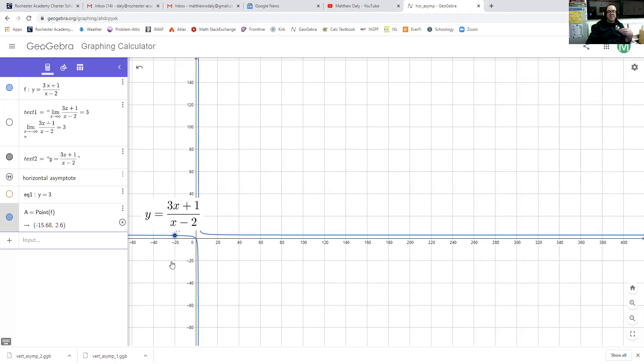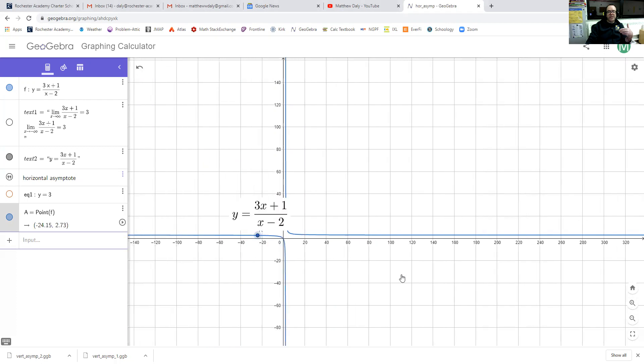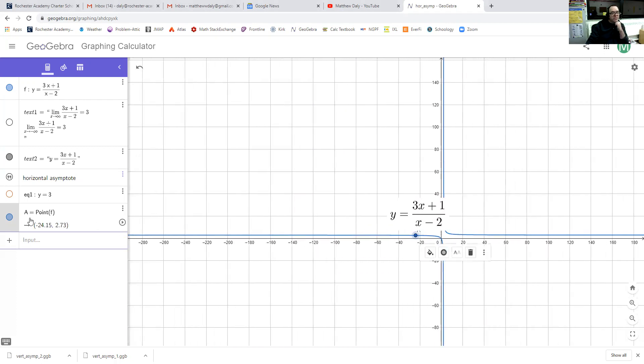And the same thing, let's look at the same thing as we head off to the left. So this time, now our x value is negative, our y value is 2.73 right now. And as we go further, 2.89, 2.94,